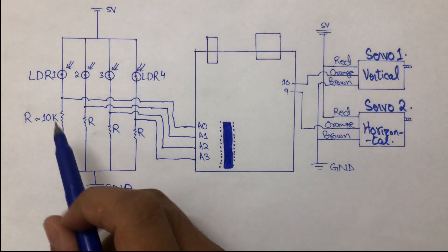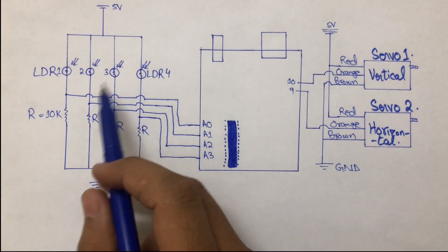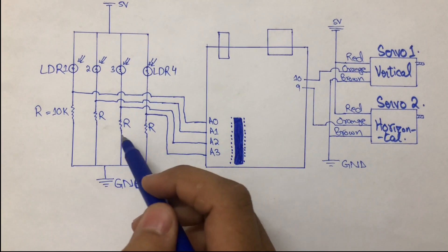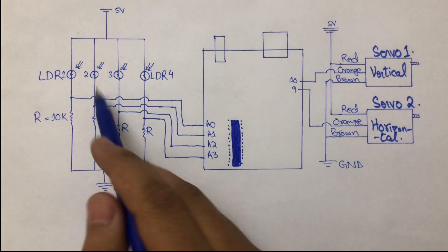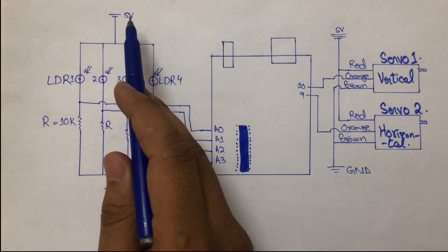In the circuit diagram, we have four LDRs in series with 10K resistors. The common point of the LDRs are connected to the 5V supply.